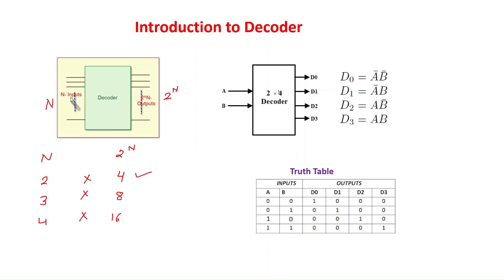If we take the example of a 2×4 decoder, we have this block diagram. The inputs are A and B, and their input values will be in binary form — either zero or one. So four combinations: 00, 01, 10, and 11, as we can see in the table. As per 00, output D0 will be one and D1, D2, D3 will be zero. In the decoder, only one output is high at a time for a given input combination.